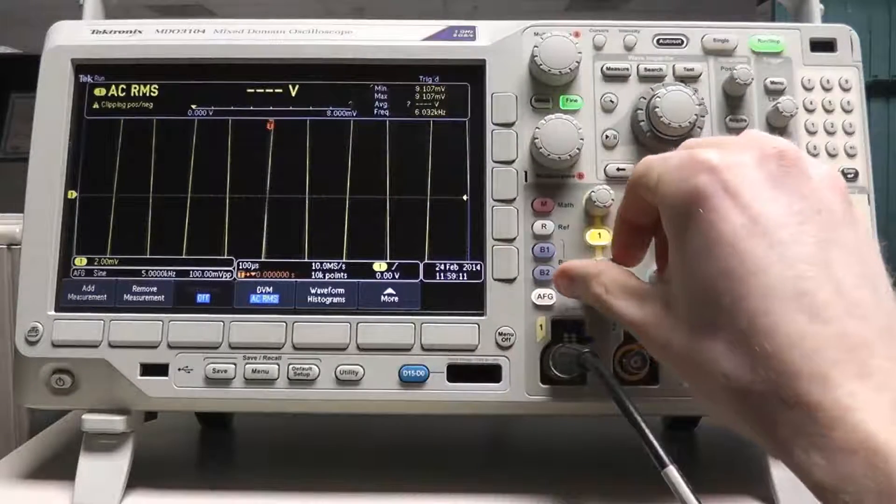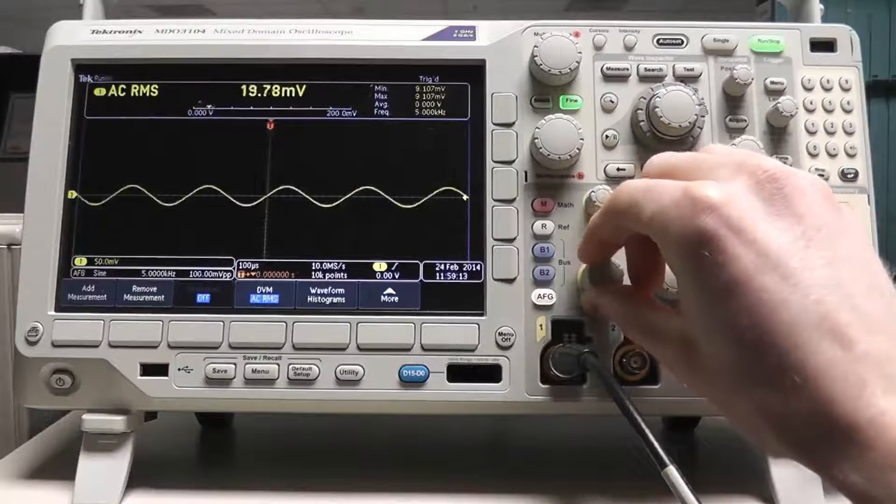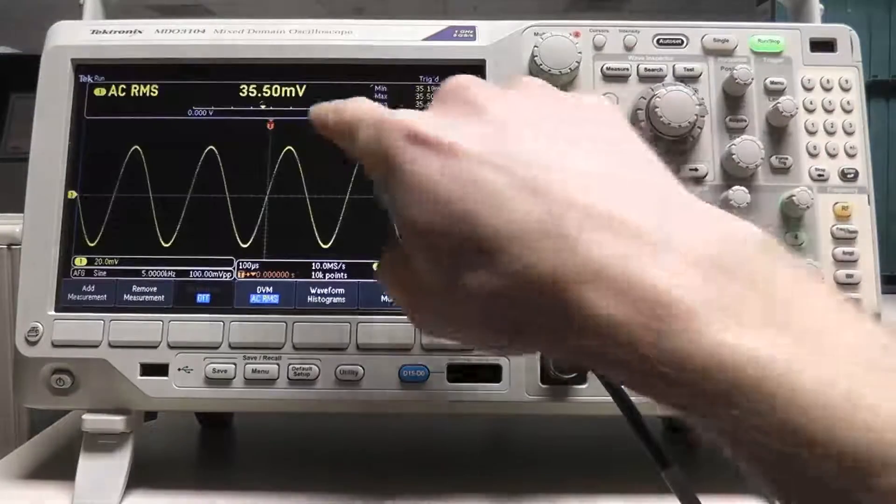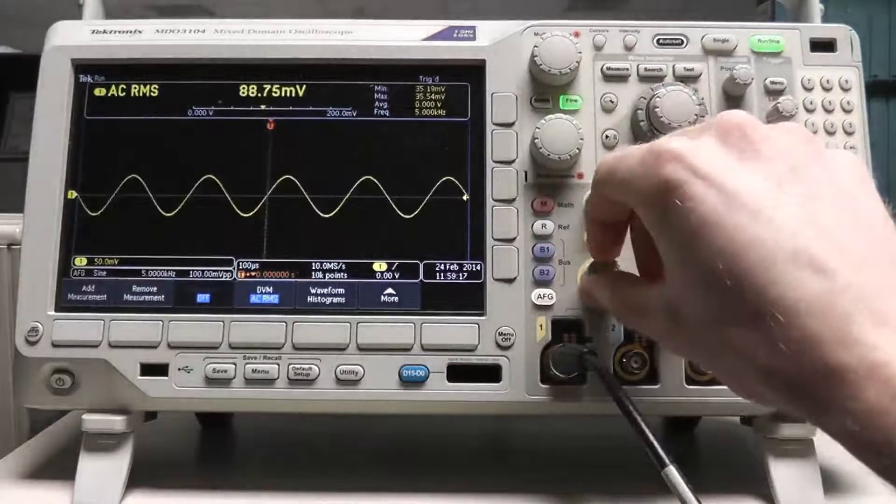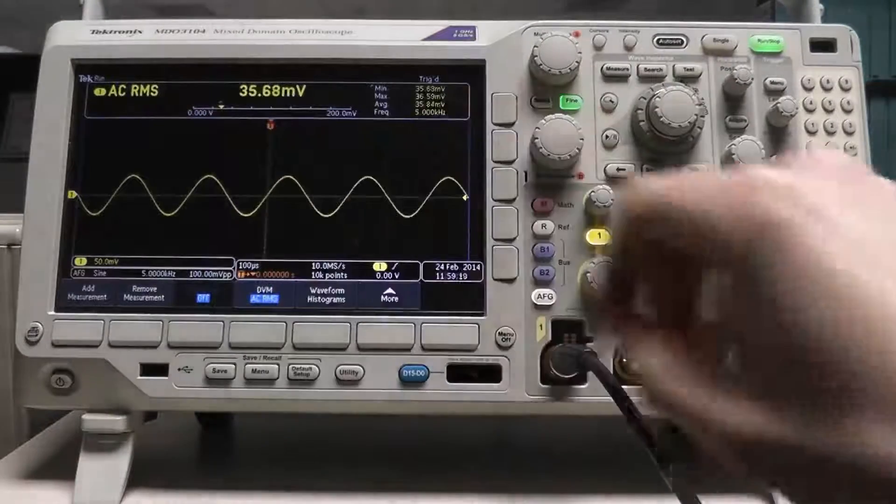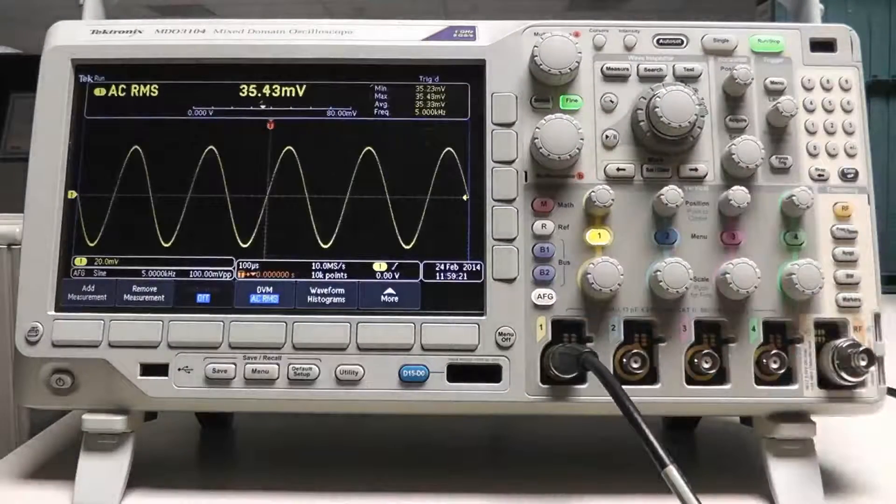You'll notice that changes in vertical scale also changes the DVM range. If the yellow current measurement arrow is visibly within the displayed range, the measurement will have the highest accuracy.